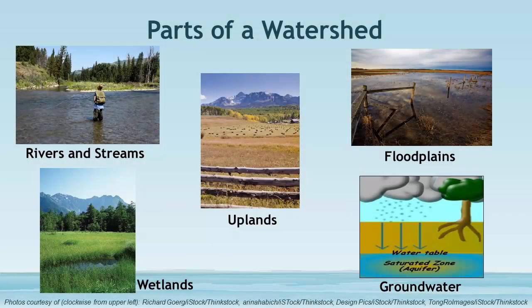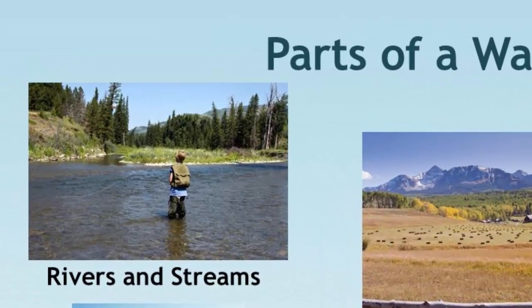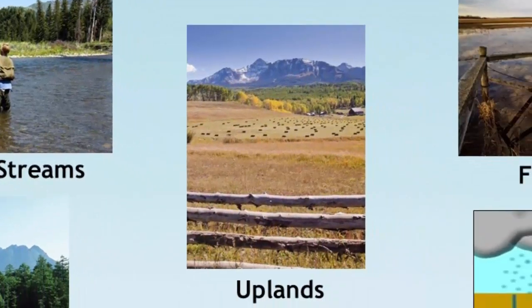Now that we know what a watershed is, let's break it down into the different parts. Rivers and streams transport water and sediment out of the watershed and provide important sources of water for the community and wildlife. Uplands are the higher ground above rivers and streams. At higher elevations, smaller streams and tributaries originate from snowmelt and springs.